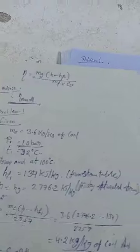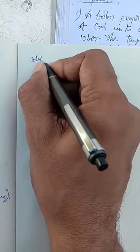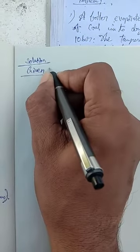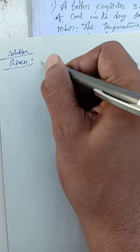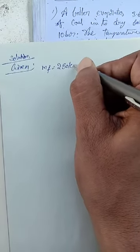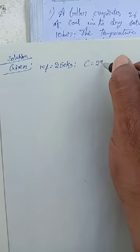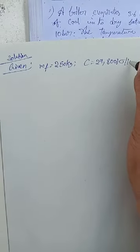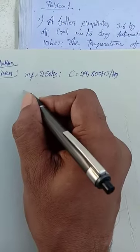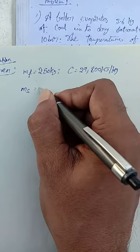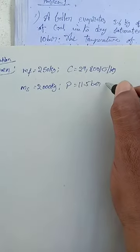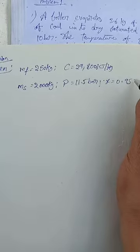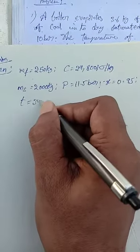Now we are going to see how to solve this problem. First we write down the given data: coal used — mass MF = 250 kg, calorific value C = 29800 kilojoules per kg, mass of steam MS = 2000 kg, pressure P = 11.5 bar, dryness fraction x = 0.95, and feed water temperature T = 34 degrees Celsius.